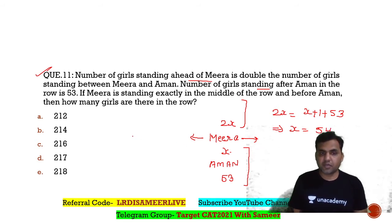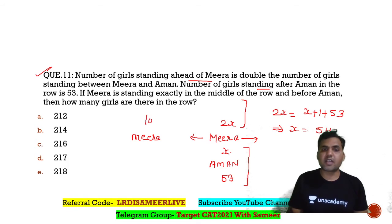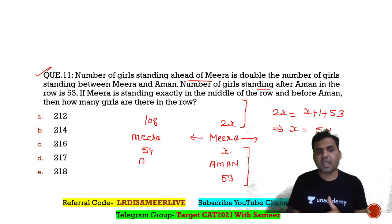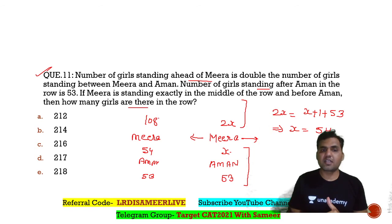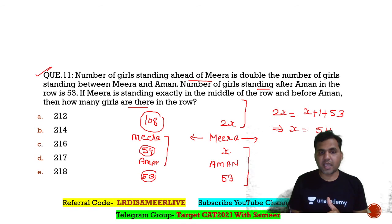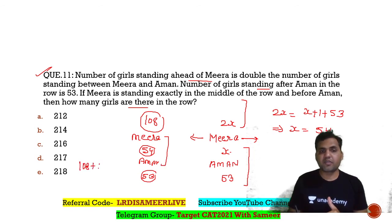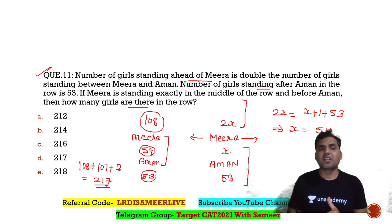With x = 54, ahead of Mira there are 108 girls, between Mira and Amal there are 54 girls, and after Amal there are 53 girls. The total number of girls in the row = 108 + 54 + 53 + Mira + Amal = 215 + 2 = 217. Wait — 108 + 54 = 162, plus 53 = 215, plus 2 = 217. The correct answer is option D: 217.